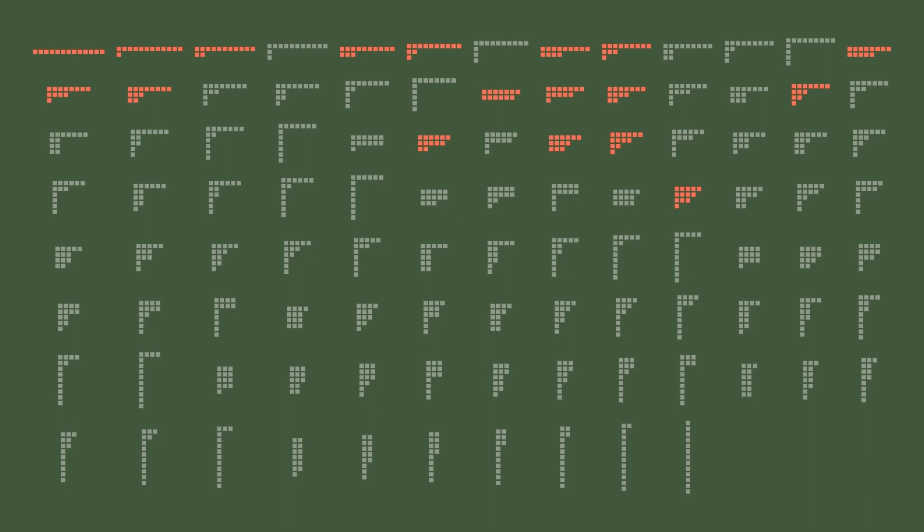Now let's get to the curious part, and consider two different sets of partitions with special properties. First, let us look at all partitions where all parts are different — no repetitions in the numbers of the entries per row. This is satisfied by the highlighted partitions, overall 18 out of the 101. And for the second set, we highlight all partitions where all of the parts are odd, which is also satisfied by 18 out of the 101 partitions.